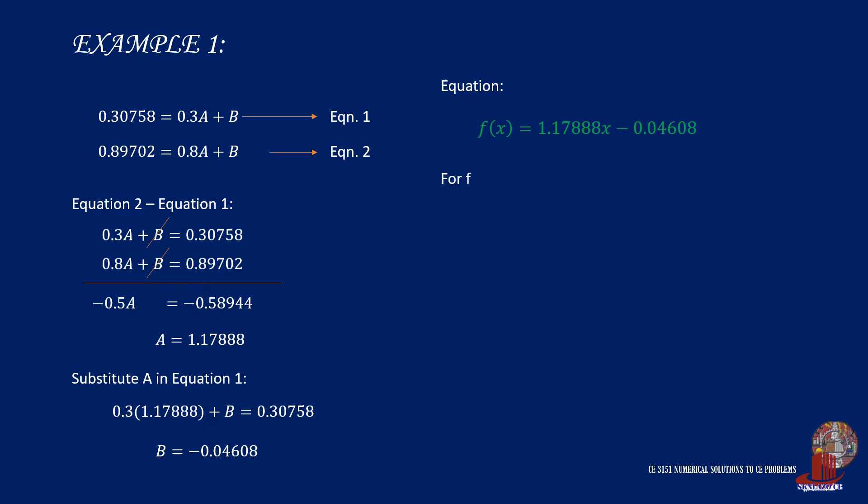Let's check the value of y at 0.7. So, plug 0.7 into the equation coming out as 0.779136. This value is close to the true value of y from the dataset as 0.7586.